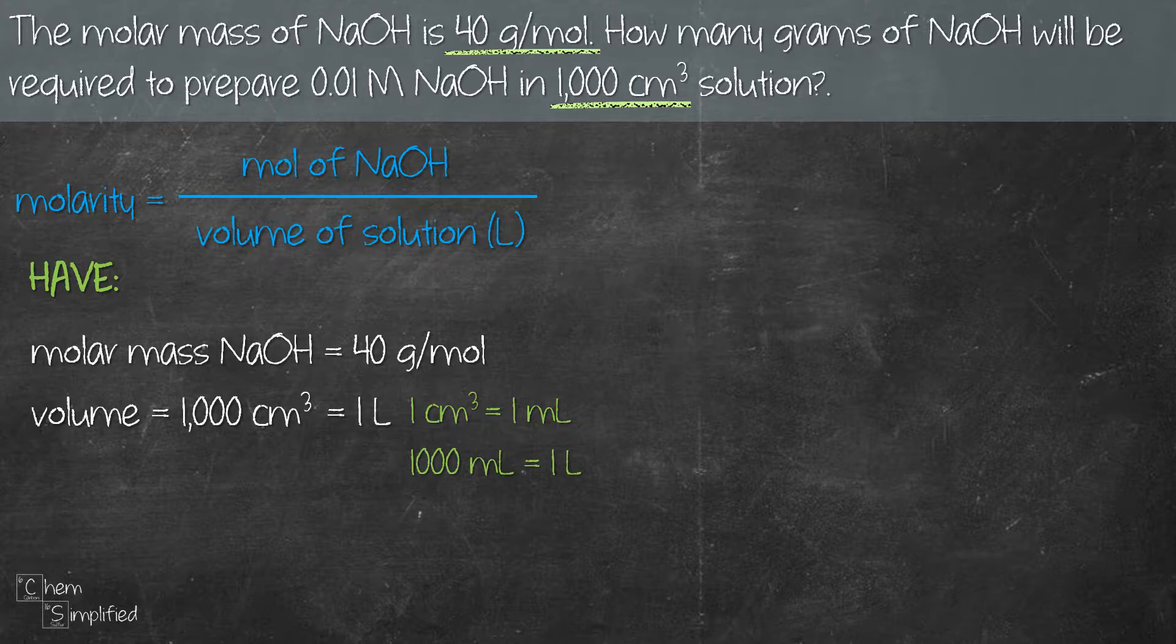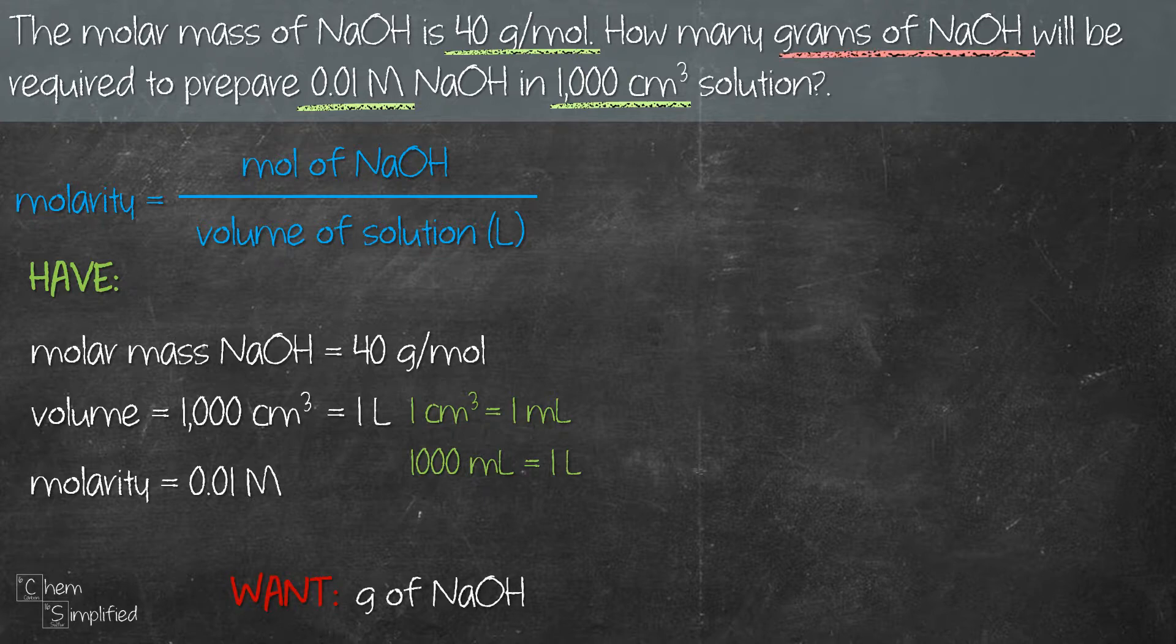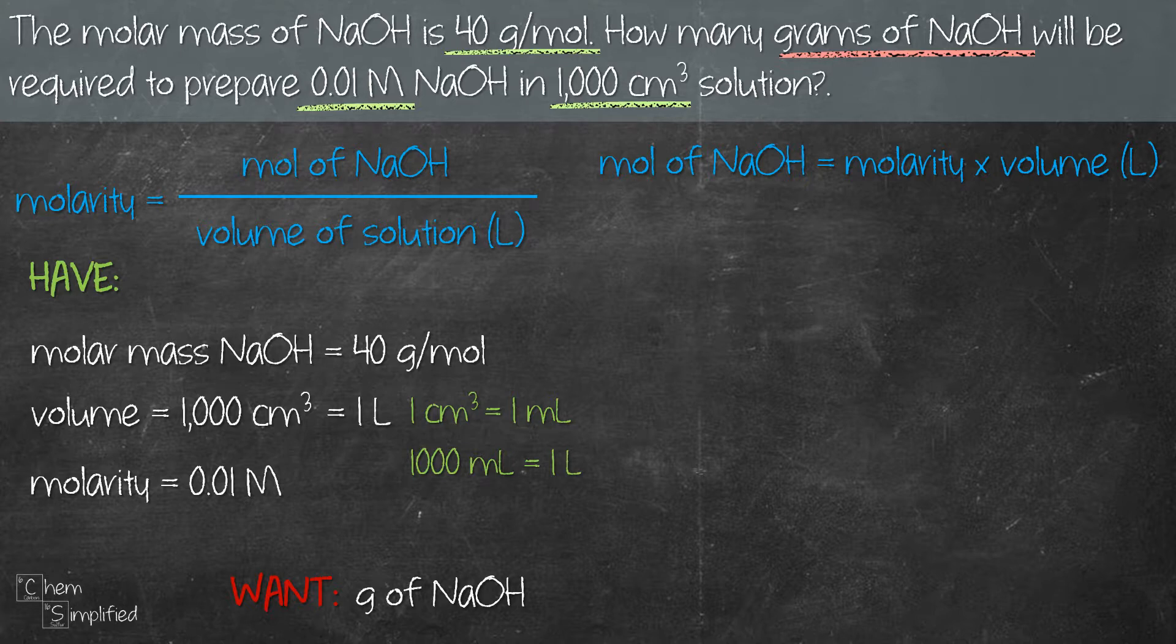We also have the molarity from the question, which is 0.01 molar, and the question wants us to find the grams of NaOH. Since we have the molarity and volume, let's rewrite the molarity formula to give us mole of NaOH. And then we plug in the values that we have and that's going to give us 0.01 mole.